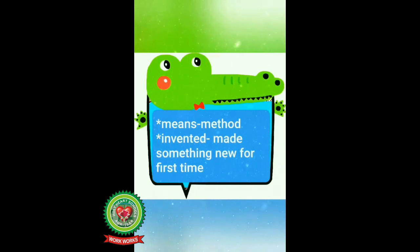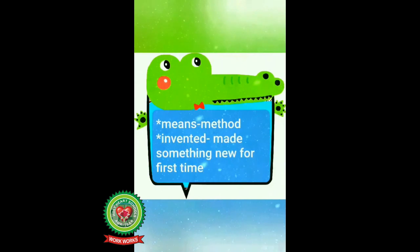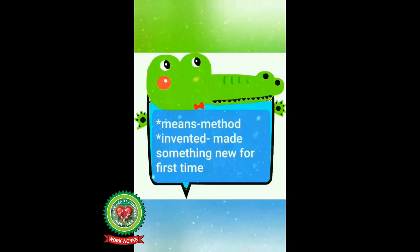The fastest means of communication is the telephone. Alexander Graham Bell invented it in 1876. Now students, underline the words 'means' and 'invented.' The meaning of 'means' here is method, and 'invented' means made something new for the first time.